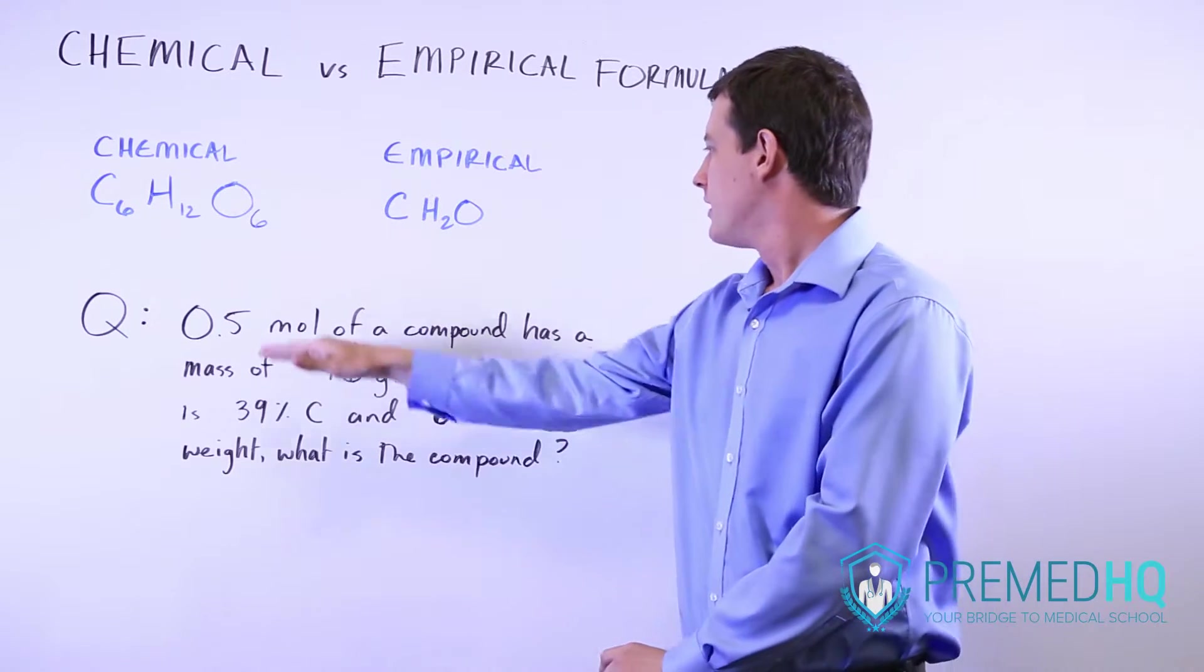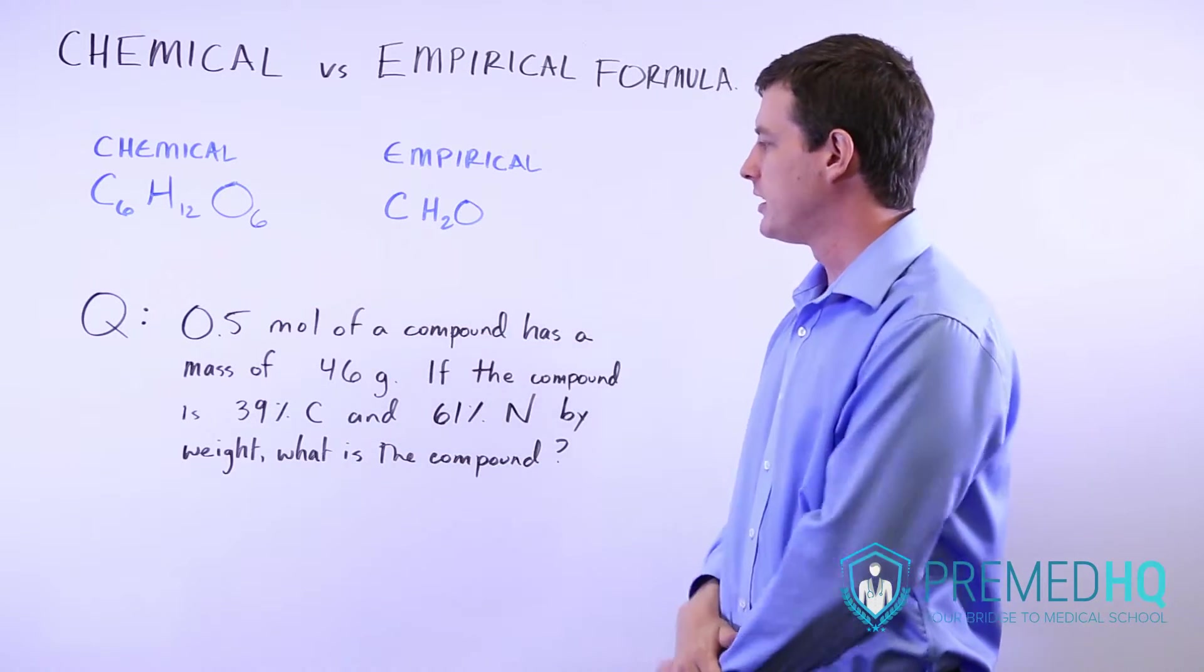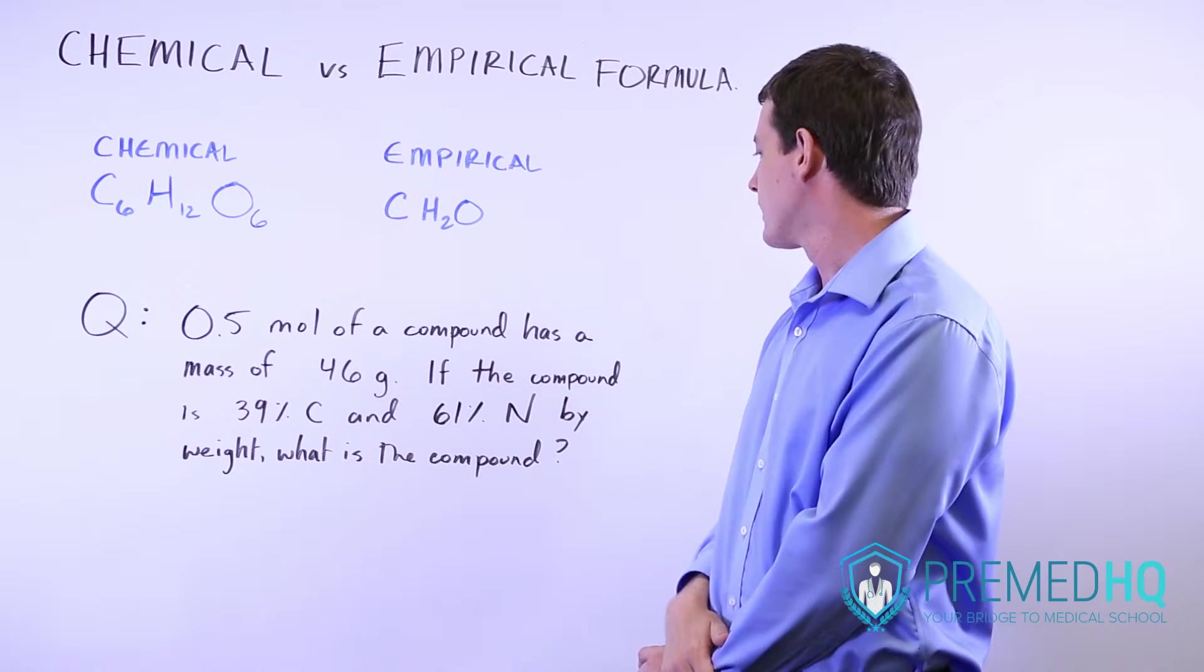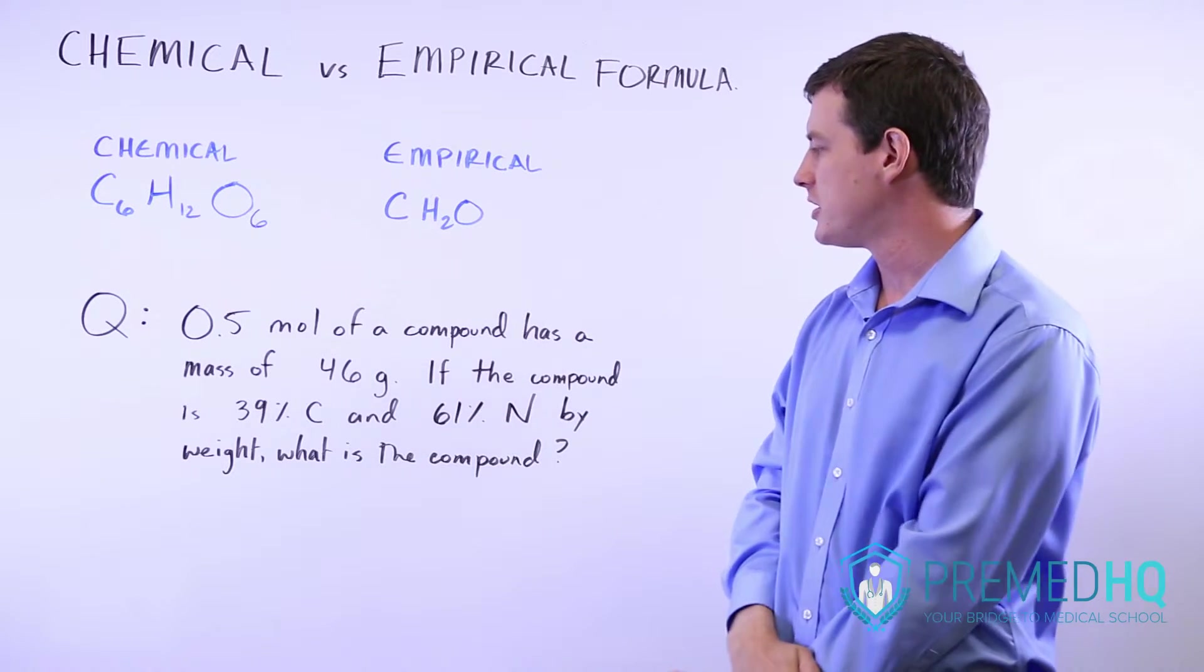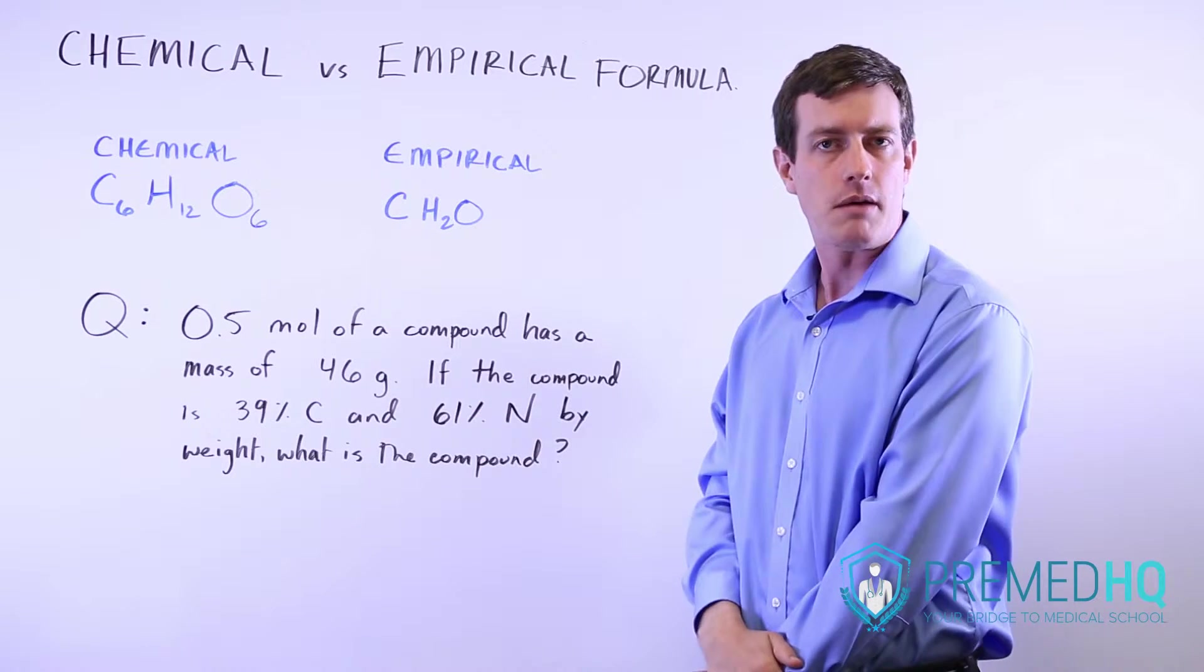Here's an example. The question is: half a mole of a compound has a mass of 46 grams. If the compound is 39% carbon and 61% nitrogen by weight, what is the compound?